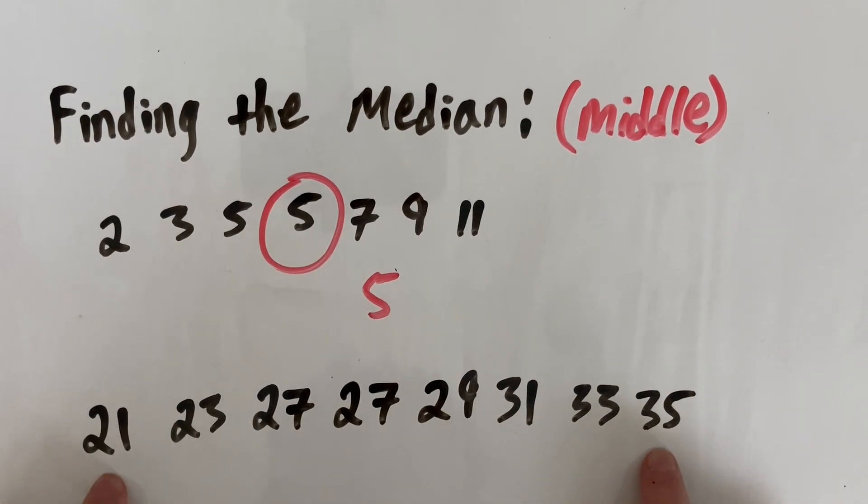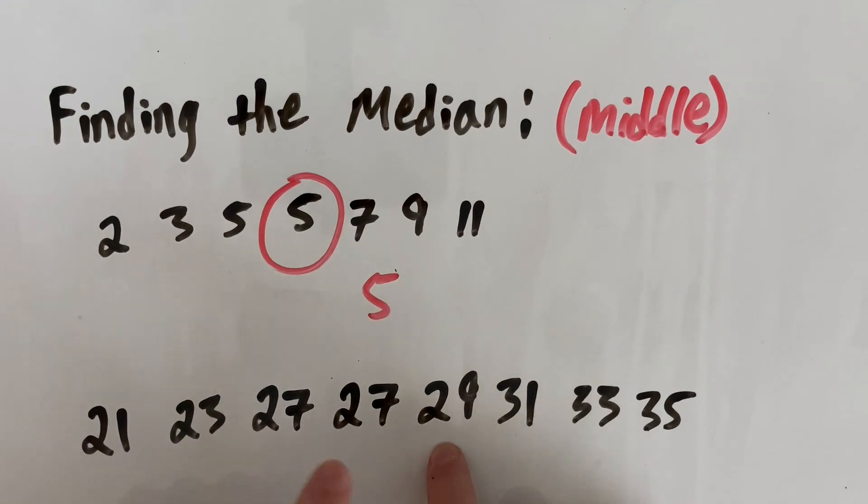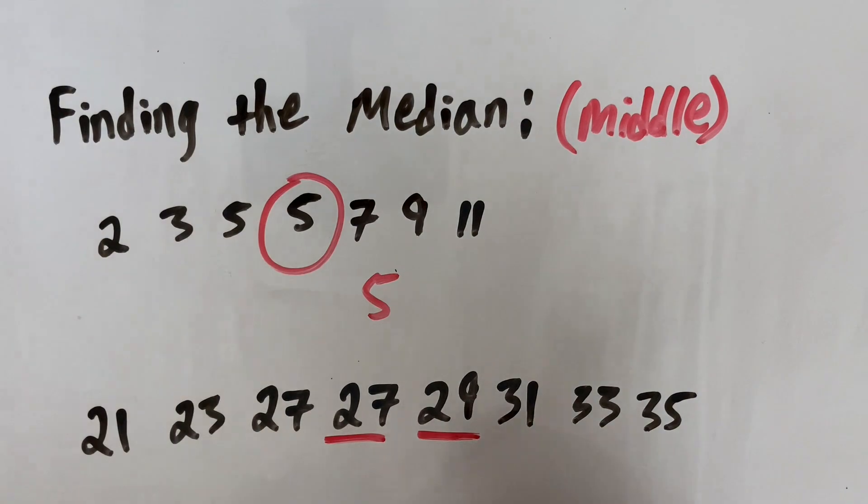So if we start from the outside, do the same process, working in, we have two middle numbers. There's not one. We have 27 and 29.